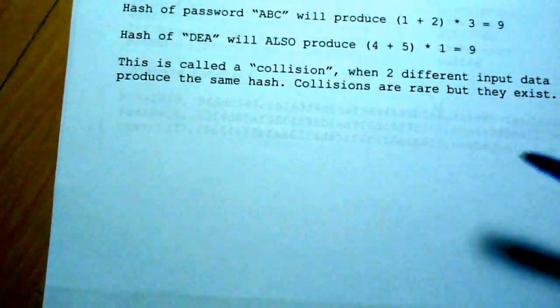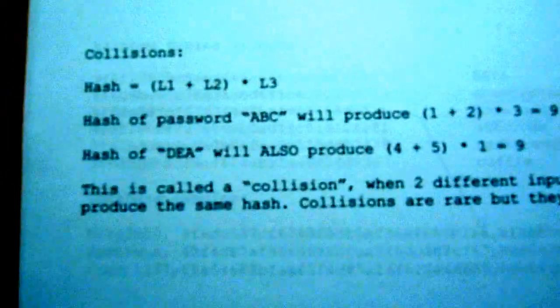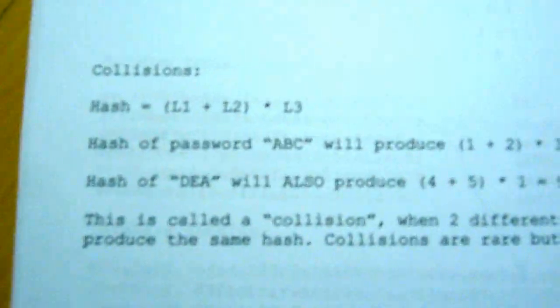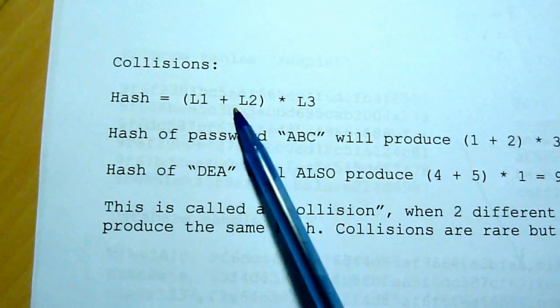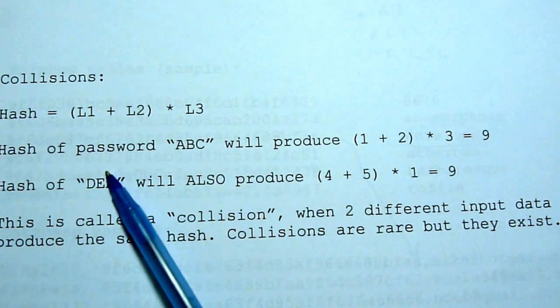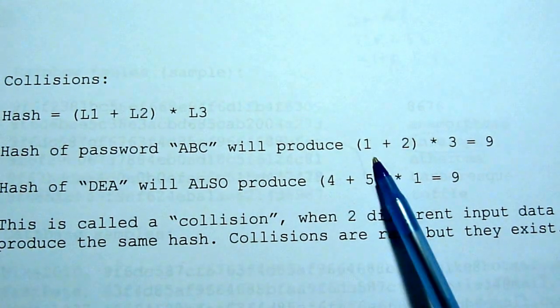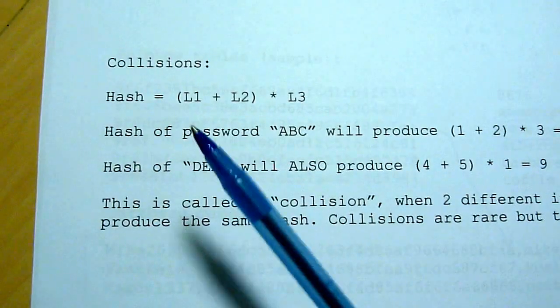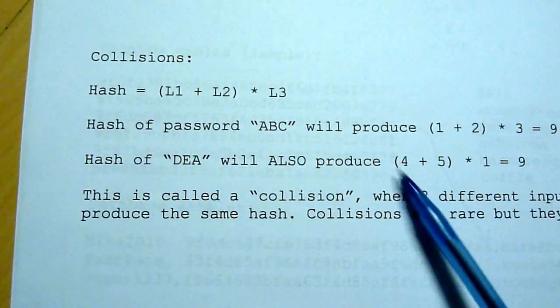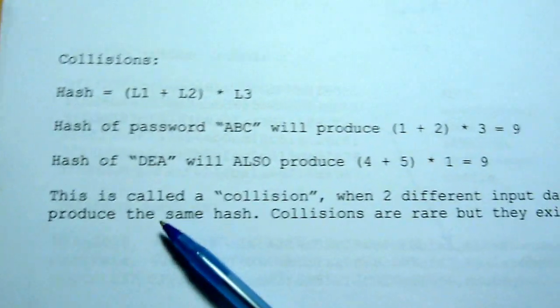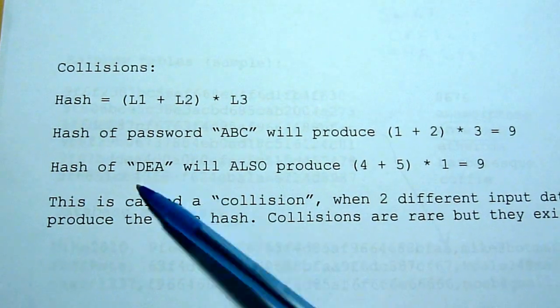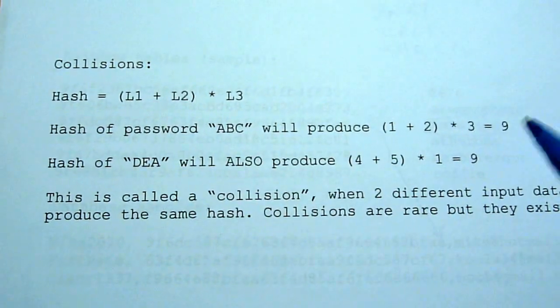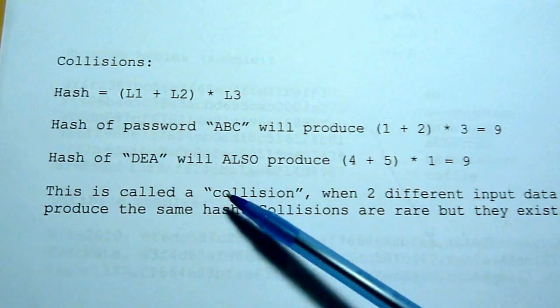Now, is it possible for two passwords to produce the same hash? Yes, it's possible. And this is called a collision. So let's use our formula here. If we calculate the hash of ABC, we get 9. But if we calculate the hash of DEA, 4 plus 5, multiply 1, we also get 9. So we have two different passwords, they're not even close, but they produce exact same hash. This is called a collision.